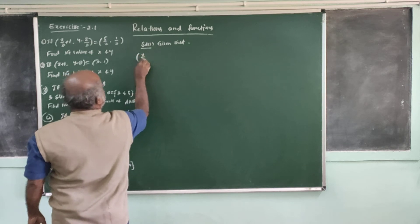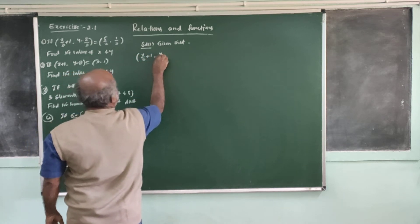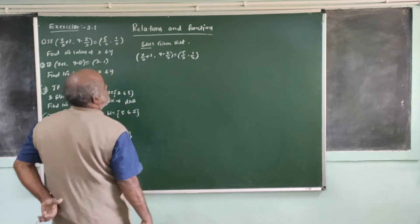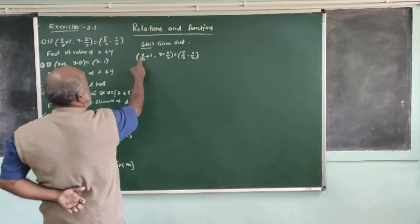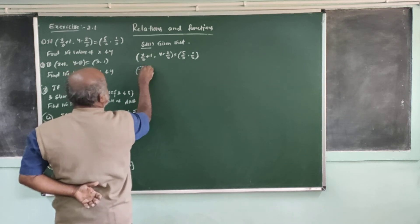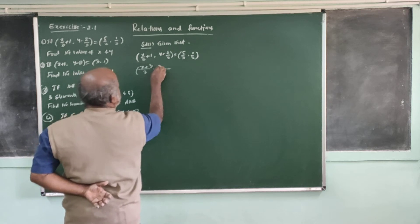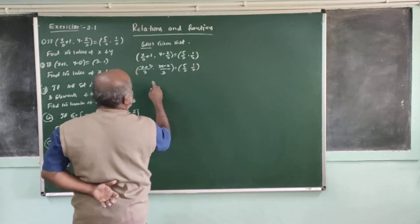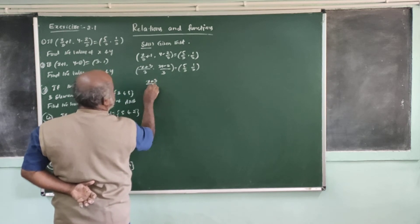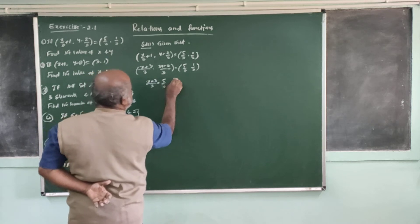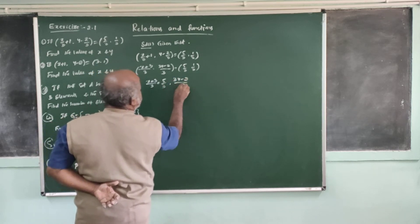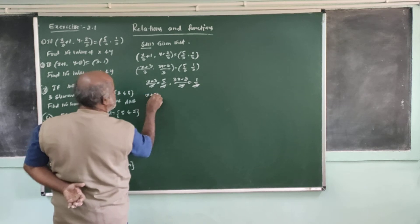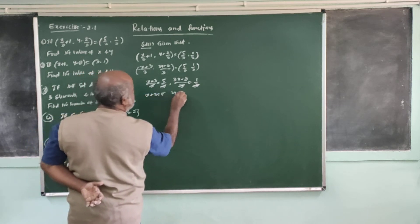The value of x and y minus 2 by 3 is equal to 5 by 3, 1 by 3. Then the value of x plus 3 is equal to 3. This is equal to 3. This is equal to 3y minus 2. This is equal to 5 by 3. 1 by 3 is equal to 3. Then the value of x plus 3 is equal to 5 by 3. Planet of x plus 3 is equal to 5. x minus 2 is equal to 5. 3y minus 2 is equal to 5.